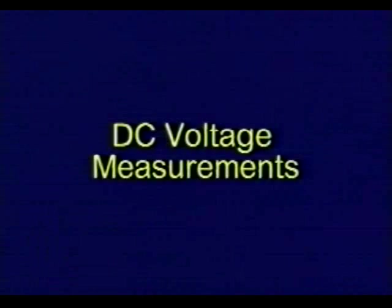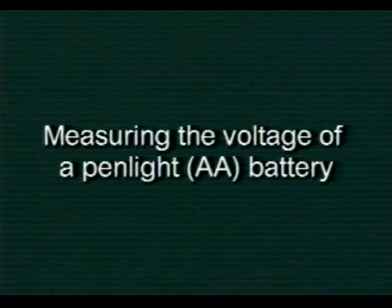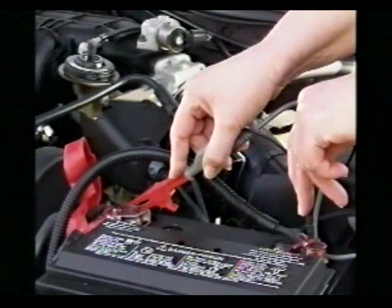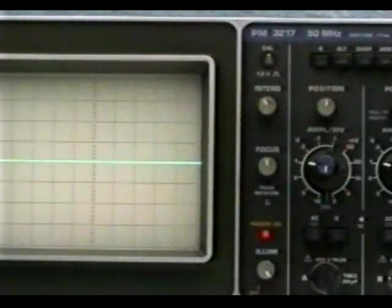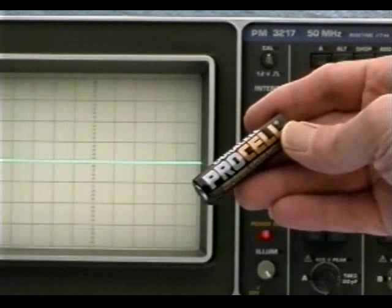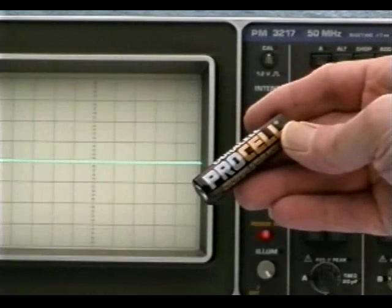In this section on DC voltage measurements, we'll concentrate on measuring the voltage of a simple penlight AA cell. You can use the techniques you'll learn here to measure just about any DC source, including a car battery or a DC power supply. Just in case you forgot, an alkaline AA cell has an open circuit terminal voltage of approximately 1.5 volts.